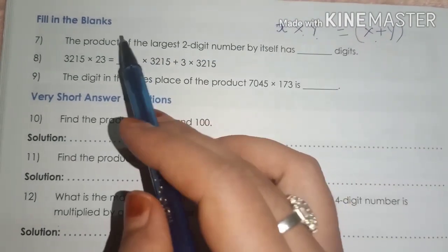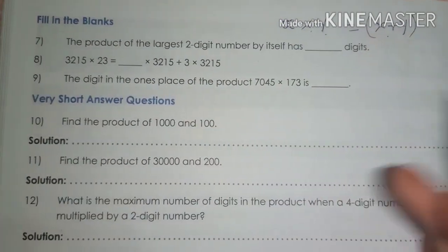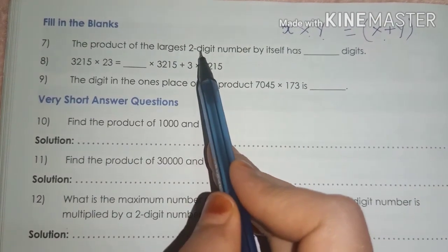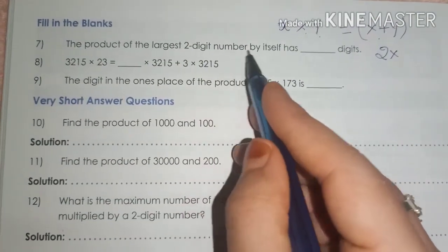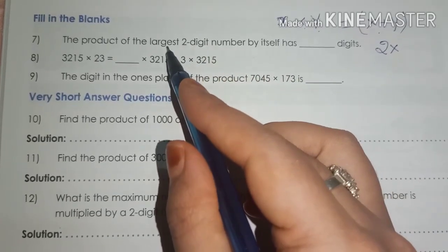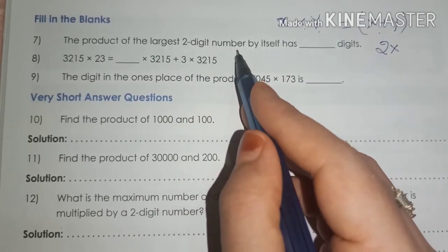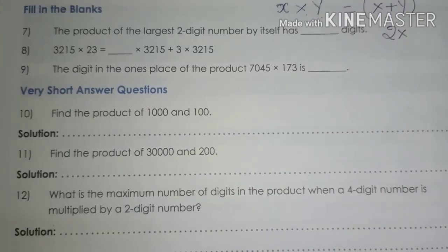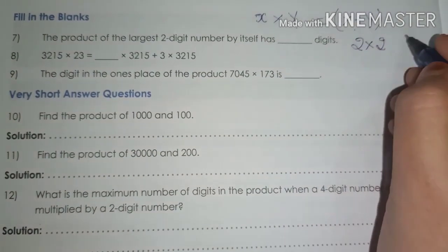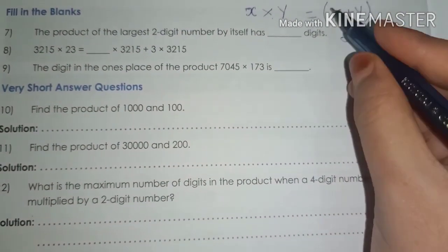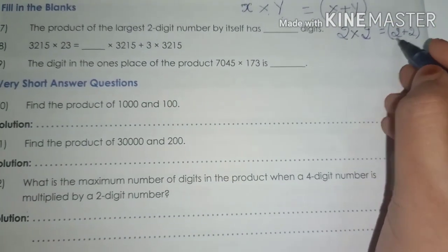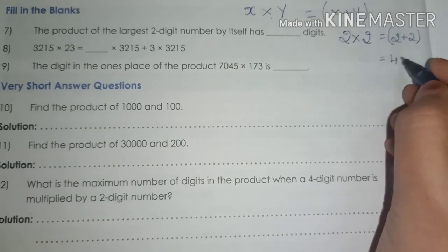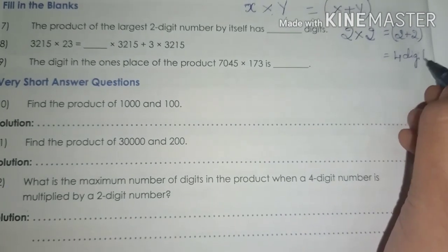Now, they are asking the specific here: the product of largest two-digit number by itself. Means again, we are multiplying with two-digit number only. Then, the product should be x plus y, means 2 plus 2. 2 plus 2 is 4. So, it is a 4-digit number.